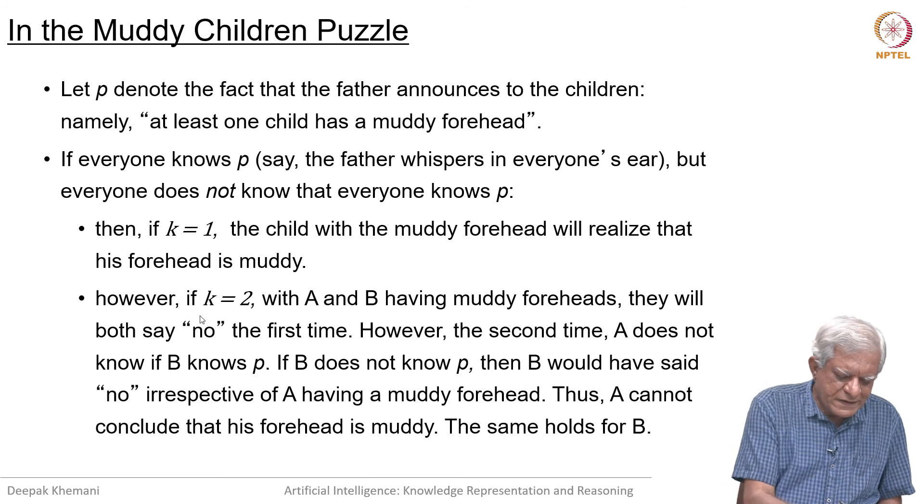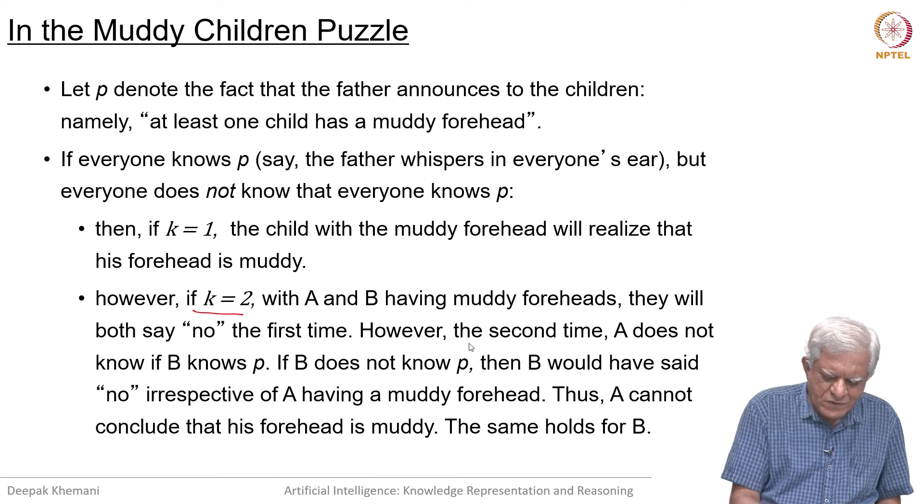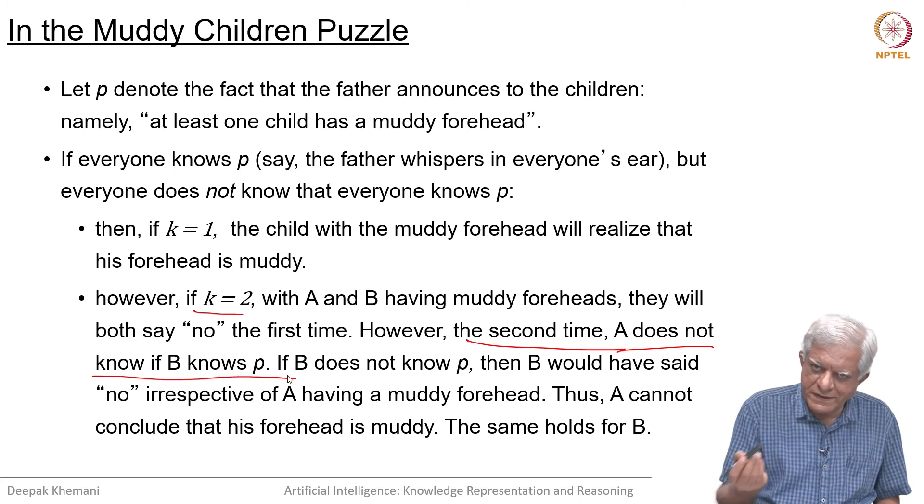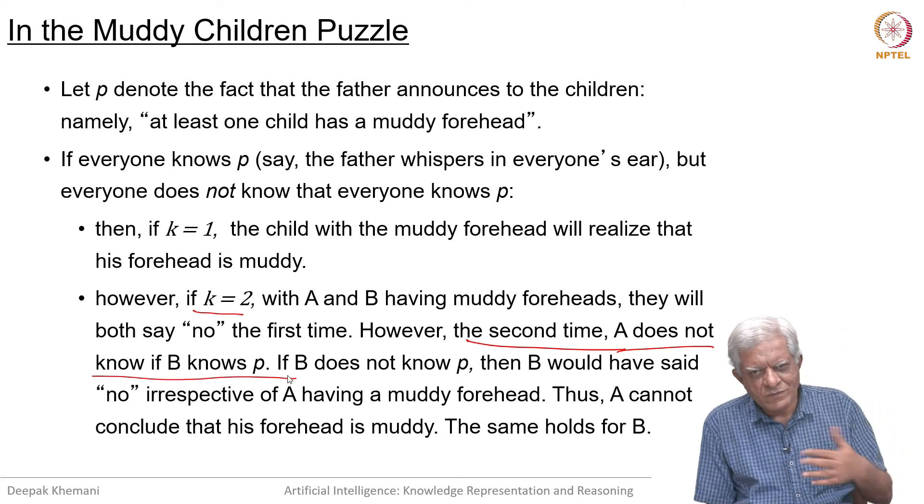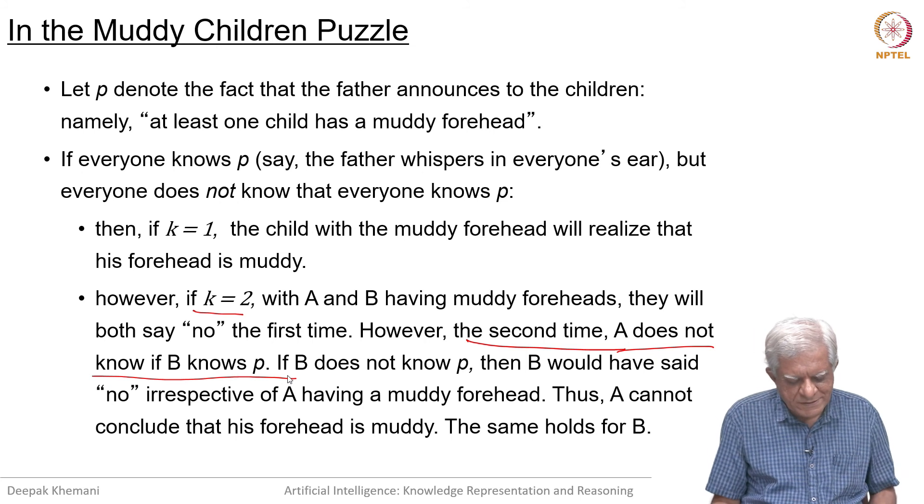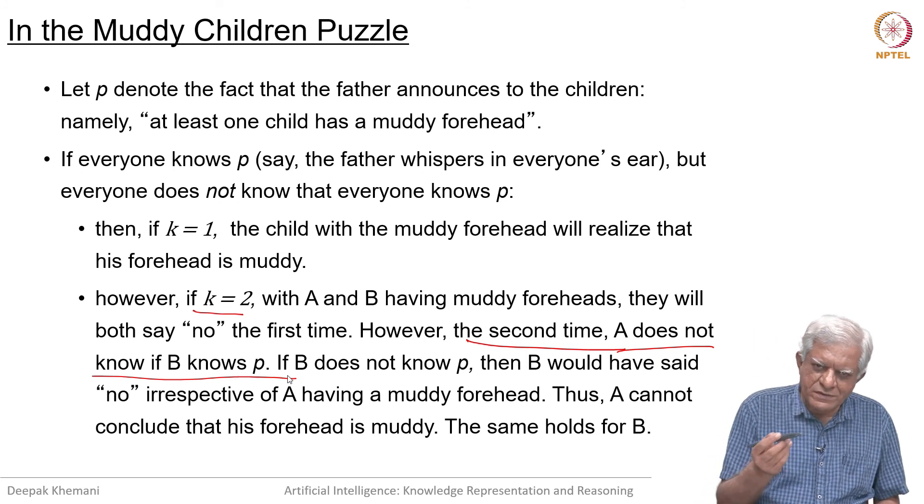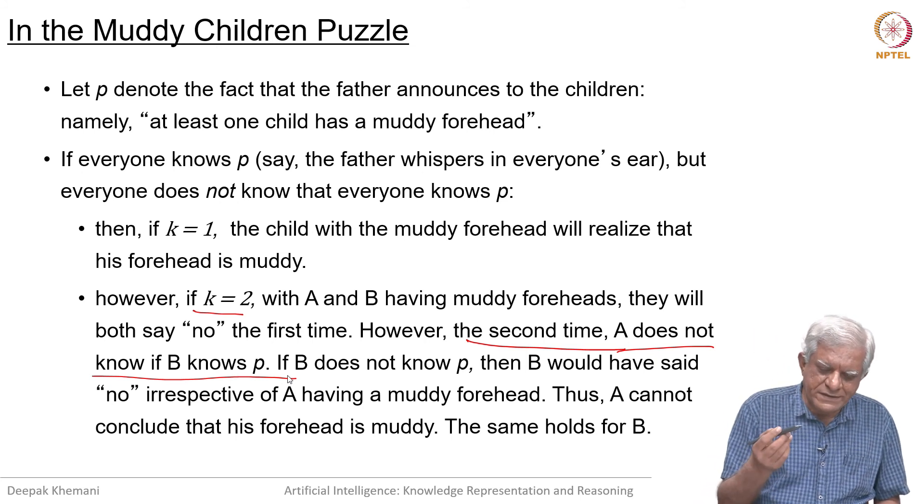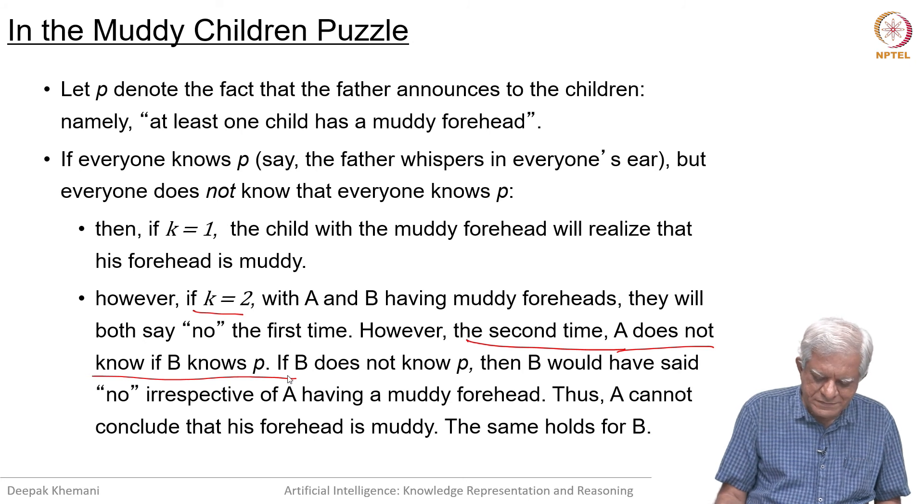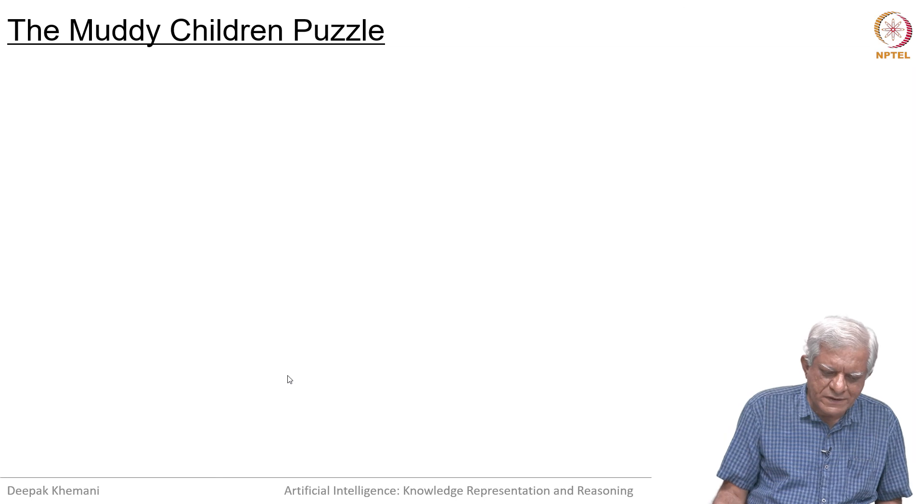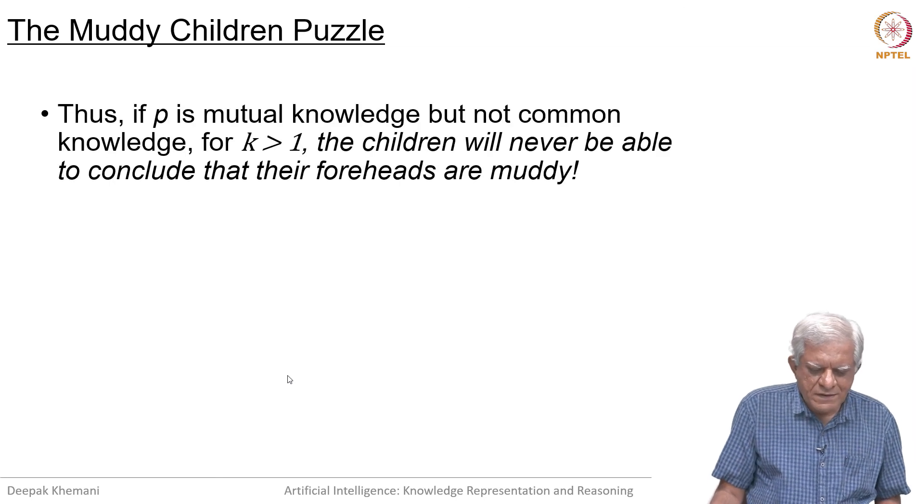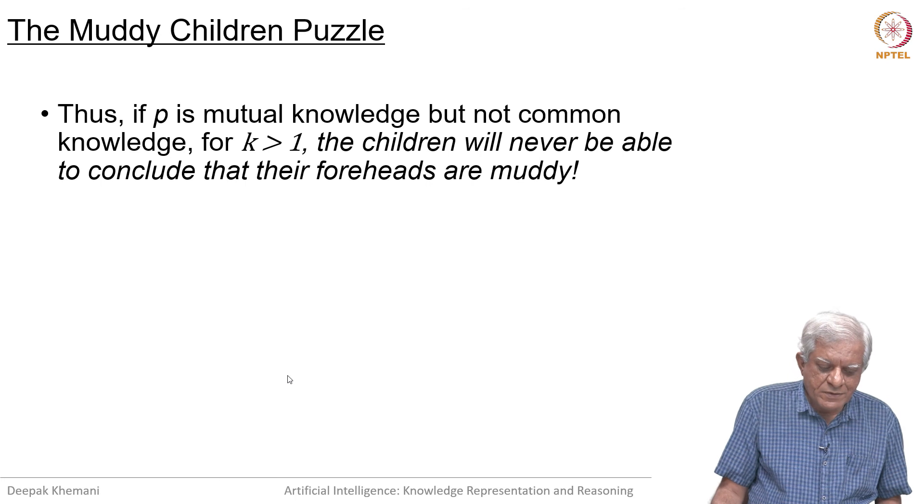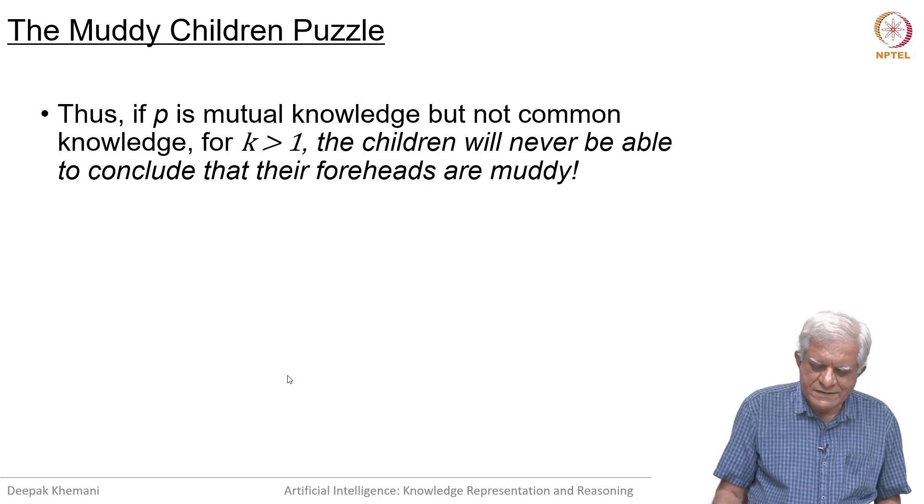This is the case because when k equals 2, the second time A does not know if B knows P, because A does not know what the father told B. Therefore, A will not know why B is not stepping forward. In general, mutual knowledge will not help here. The children will never be able to conclude that their foreheads are muddy.